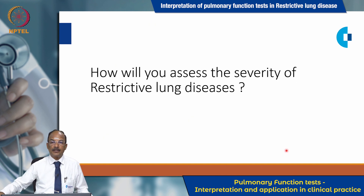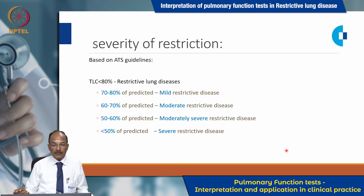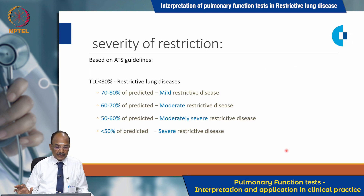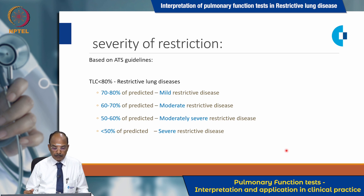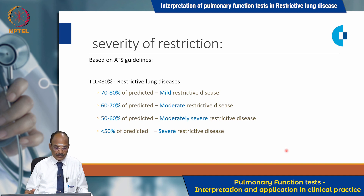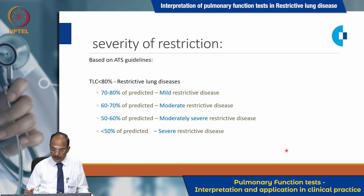How do you assess the severity of restrictive lung diseases? Based on ATS guidelines, if total lung capacity is less than 80 percent of predicted, grading is as follows: 70-80 percent is mild restrictive disease; 60-70 percent is moderate restrictive disease; 50-60 percent is moderately severe restrictive disease; and less than 50 percent is severe restrictive disease.